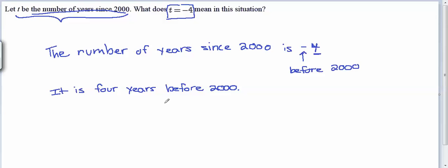Well, what year was it four years before 2000? We can calculate that by taking the base year 2000 and subtracting four. That gives us 1996. So really the best way to say this would be to say the year is 1996.